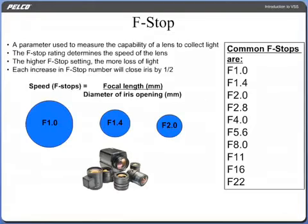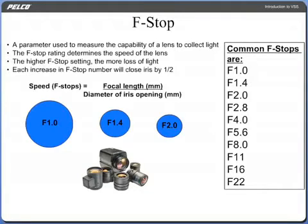An f-stop is a parameter used to measure the capability of a lens to collect light. The f-stop rating determines the speed of the lens. The higher the f-stop setting, the more loss of light. Each increase in the f-stop number will close the iris by one-half, thus decreasing the amount of light reaching the camera's sensor by a factor of 50%.